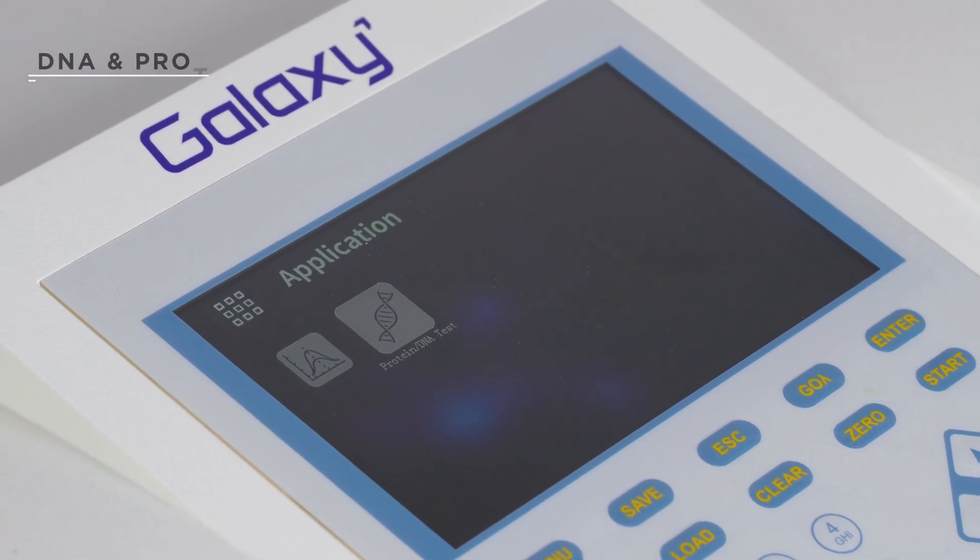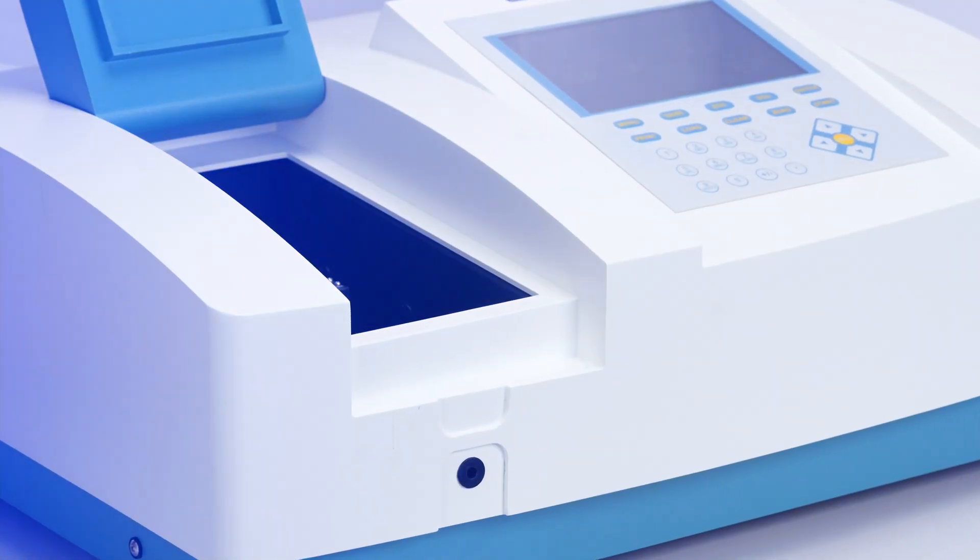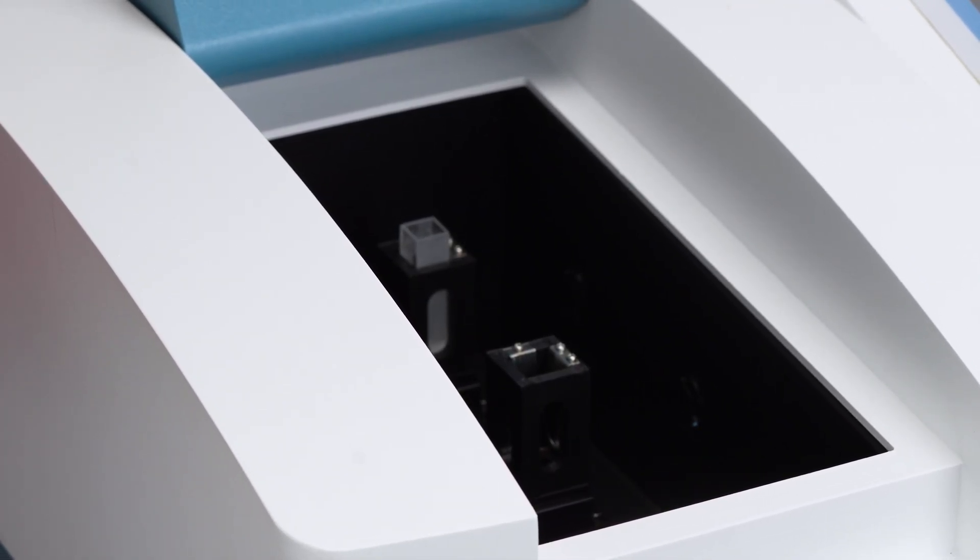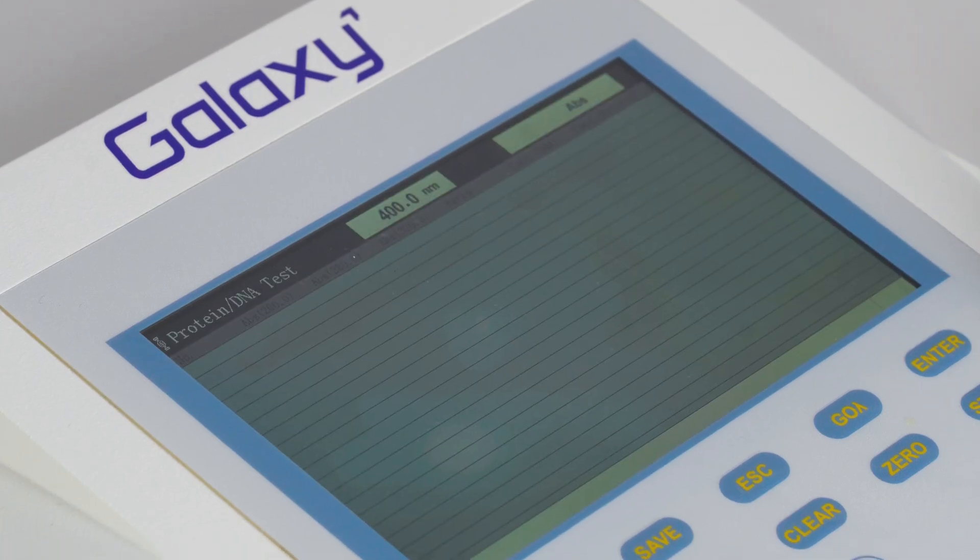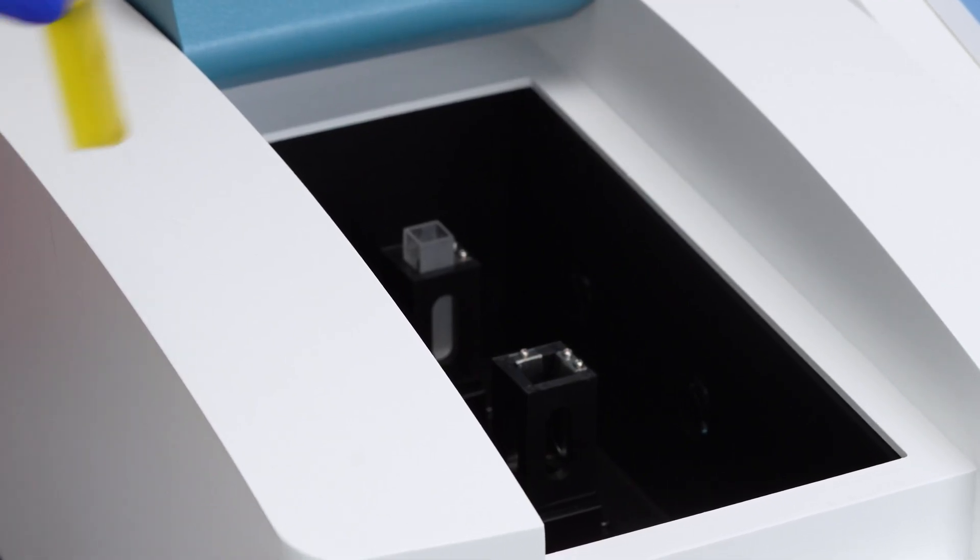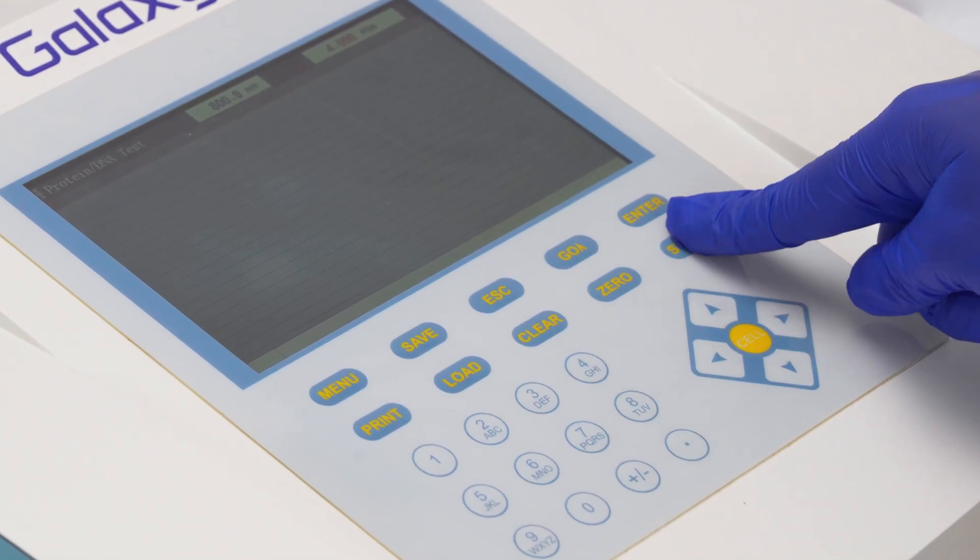In DNA and protein analysis, place nucleus-free water for blanking. Click set blank to zero the baseline. Insert the sample and press start to read absorbance.